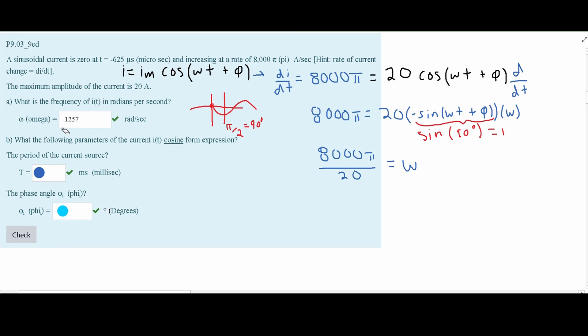Now, in part b, we are asked, what are the following parameters of the current it cosine form expression? Now, the period of the current source is what we need to find here. And we know our omega. So we can say that our omega is equal to the 2 pi times frequency. And we know that frequency is just 1 over t.